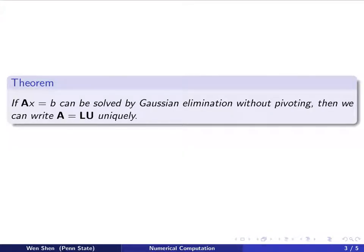We have the following theorem to guarantee the existence and uniqueness of this factorization. If the A matrix is such that AX equal B can be solved by Gaussian elimination without pivoting, then we can write A equals LU in a unique way.